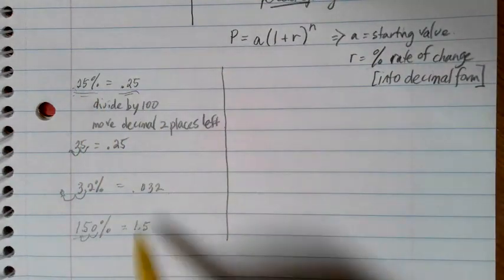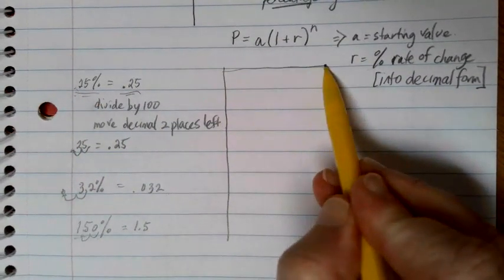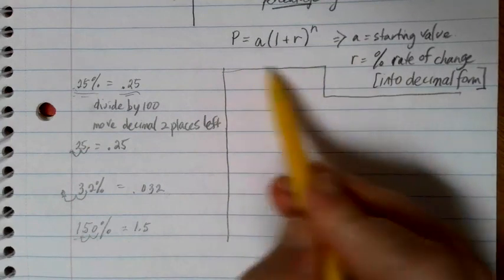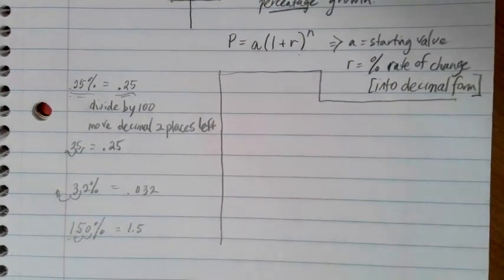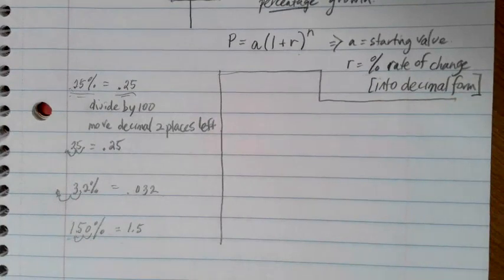So this is a step that you'll have to take every single time as you do these problems because the formula requires the decimal version of the percentage, and they're usually going to give you that value when it's in percentage form.